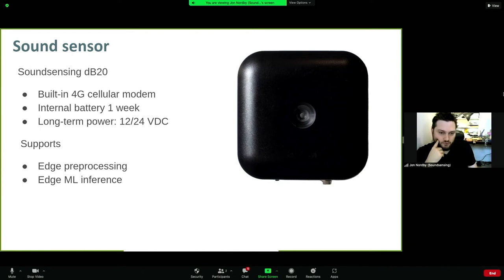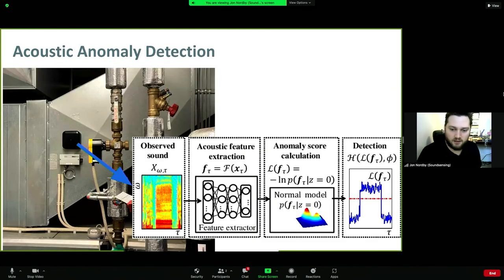We have our own developed sound sensors. The DB20 has a built-in 4G cellular modem, internal battery for one week at 12 or 24 weeks long-term use. This is not a battery-powered device, at least in production setting. It's typically powered by the same things that power the machines. This supports edge preprocessing and edge inference.